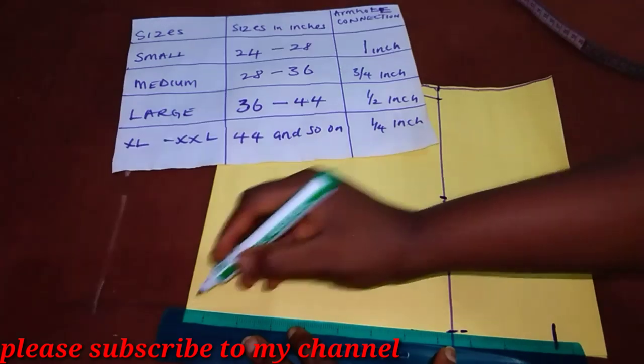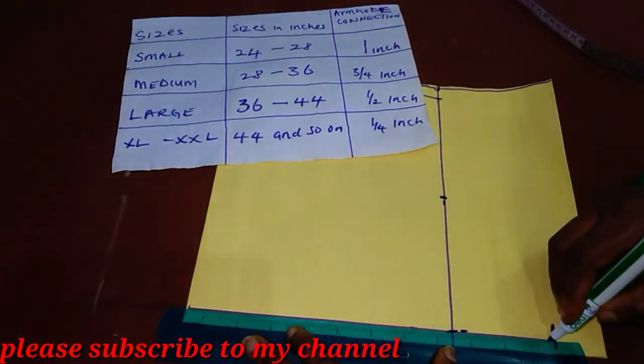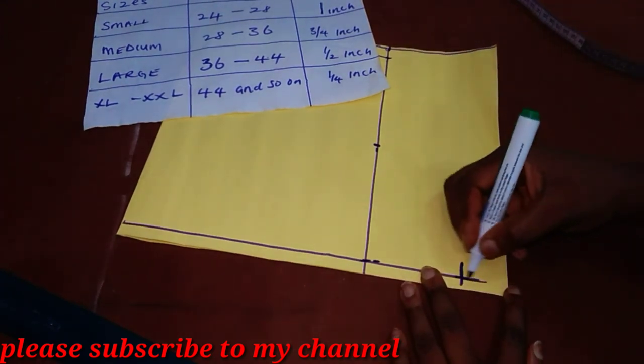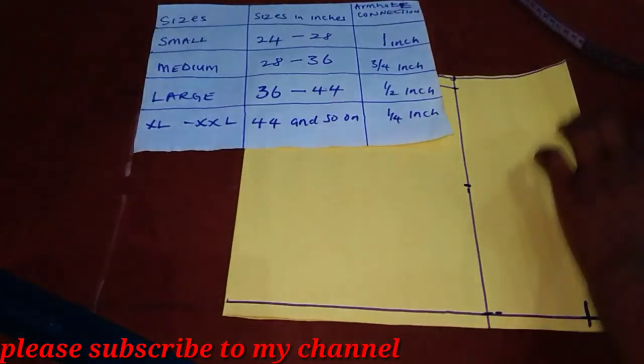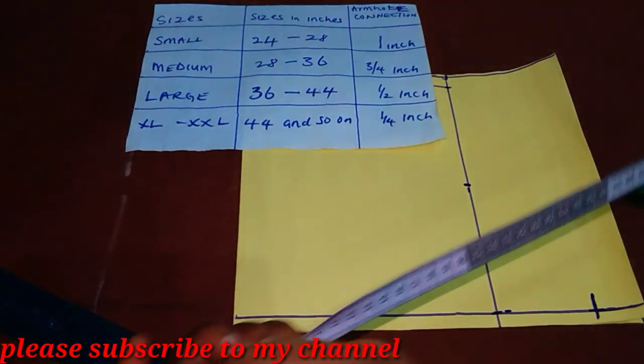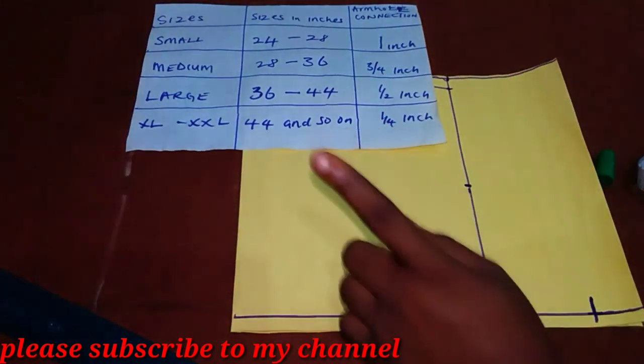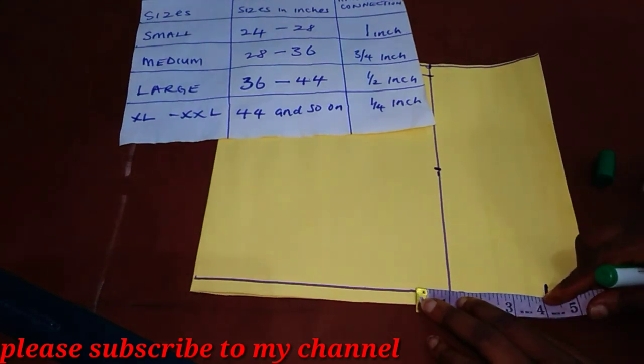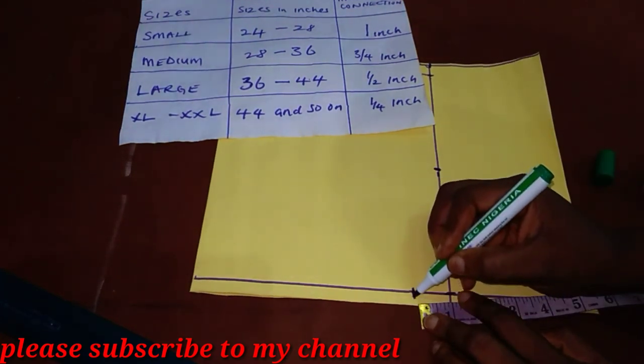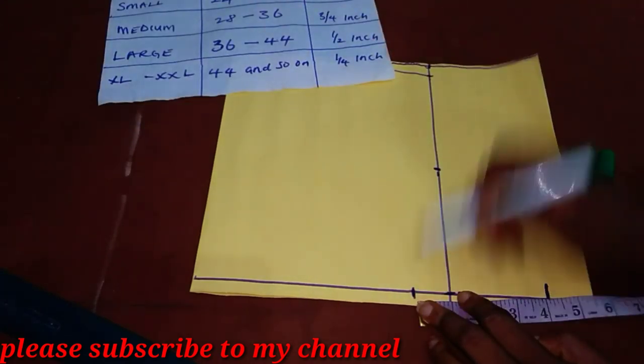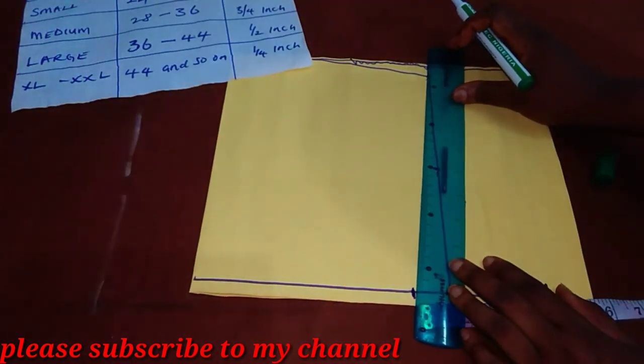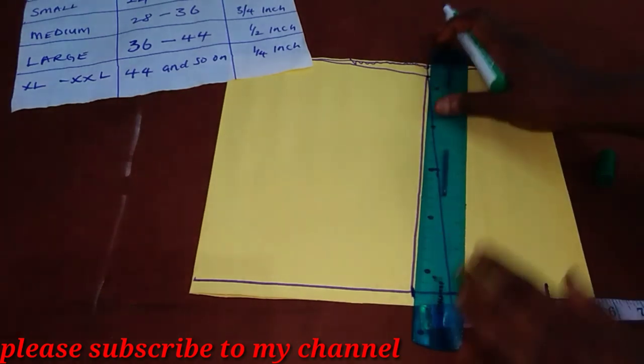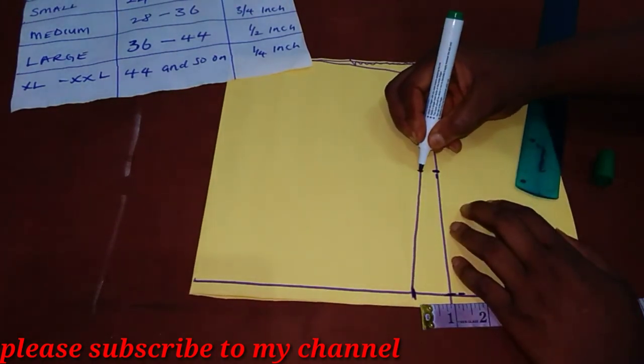Let's not forget this is our armhole depth. Now, we have to assume also that this remaining one is our seam allowance. Now, with that done, for this lazy method, all you need to do is at this point, move inwards by 1 inch. And then, connect this line to your shoulder slope. And maintain still the midpoint.